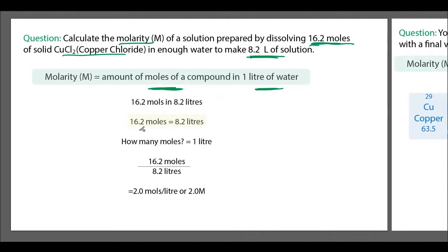We have 16.2 moles in 8.2 liters of water. If we only have one liter of water, we've got 16.2 divided by 8.2, which gives us 2 moles of copper chloride per liter. So the molarity — the M value — of the copper chloride is 2.